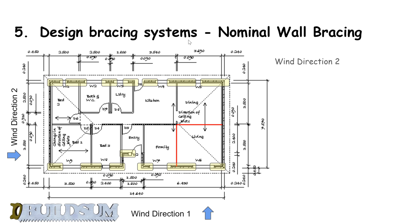We're going to look at wind direction two, which is blowing against this side of the building. The walls running in the same direction as the wind are the ones that actually resist the load. First, we're going to look at walls sheeted on one side only.